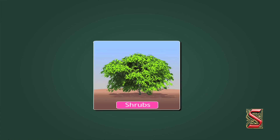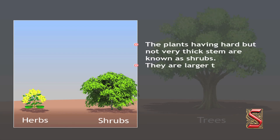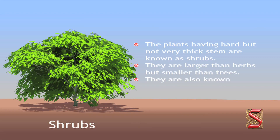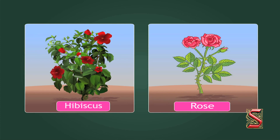The plants having hard but not very thick stems are known as shrubs. They are larger than herbs but smaller than trees. They are also known as bushes. These plants have the stem branching out near the base. They live only for a few years. Some examples of shrubs are hibiscus and rose.